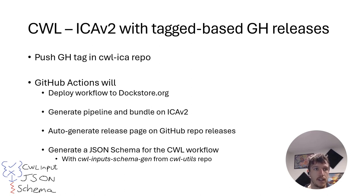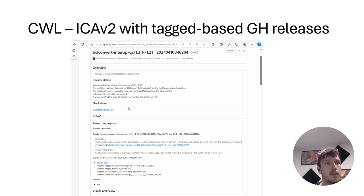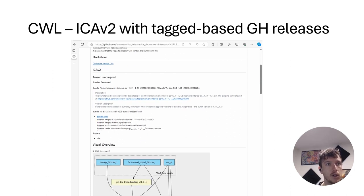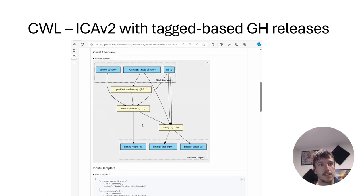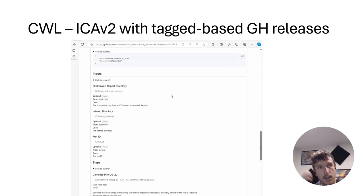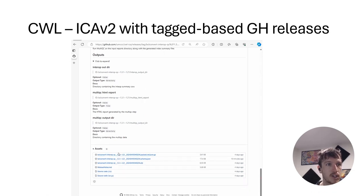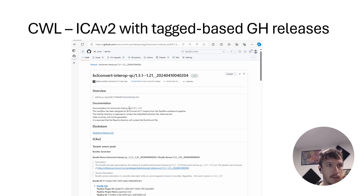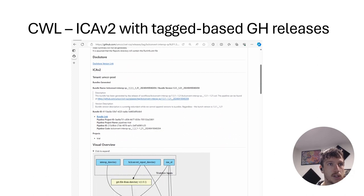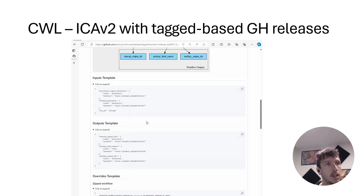On the next slide we'll show you the auto-generated GitHub release page. The documentation here is derived from the workflow itself. We generate a link for the auto DocStore deployment and then provide the pipeline and bundle IDs that were generated for ICAv2. In the Illumina Connected Analytics world, a bundle is a collection of pipelines and data sets which can be shared between projects as a single asset. We generate also a CWL packed file and a zip file, which is just a workflow.cwl in the top directory and everything else in the subfolders. We have our assets at the bottom which include the packed and zipped workflows along with our input JSON Schema. So before running this workflow on ICAv2, a user can first validate their input JSON against the schema in this asset list, otherwise they might have to wait some time for their workflow to fail and try again.